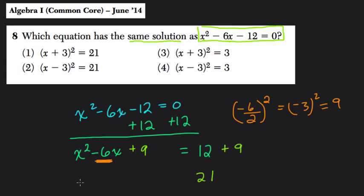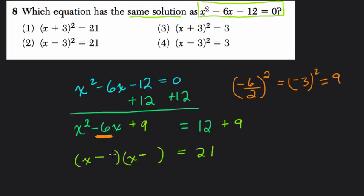Over here, how do we factor this? We're looking for a number times itself that equals this trinomial. So we factor it out. We have x and x, two numbers that multiply to 9 but add to negative 6. 9 is a perfect square, so it's either 3 and 3 or negative 3 and negative 3. I'm going to use negative 3 and negative 3 since we're trying to add to negative 6. So this is x minus 3 squared equals 21, which is choice 2.